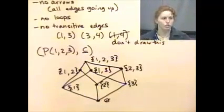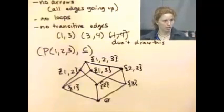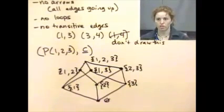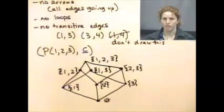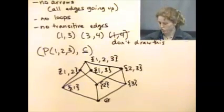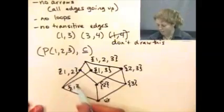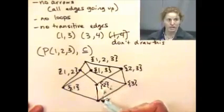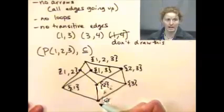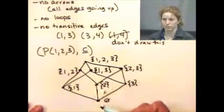I would have a lot more lines in here if I had to draw the reflexive points, because reflexive means every single node is a subset of itself — I'd have to draw a loop on every single one of them. And transitivity would require drawing a line from the empty set to all the other ones. So you can really see it's useful to make a Hasse diagram instead of drawing the entire graph.